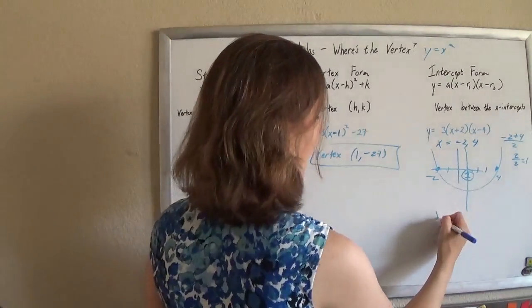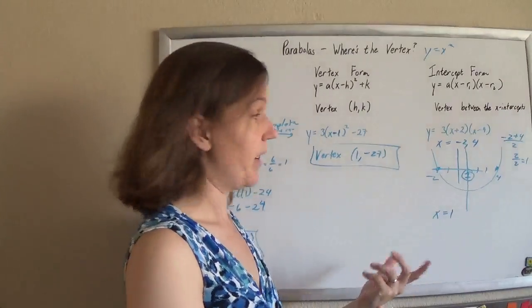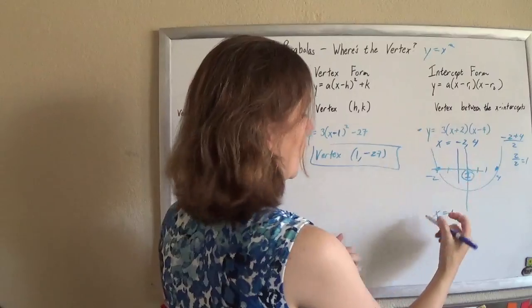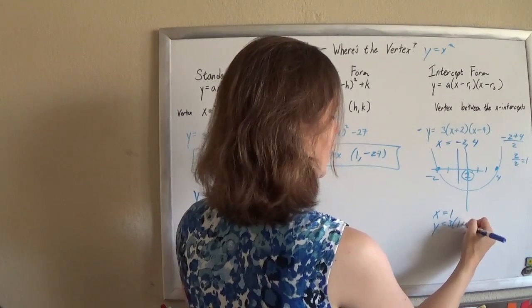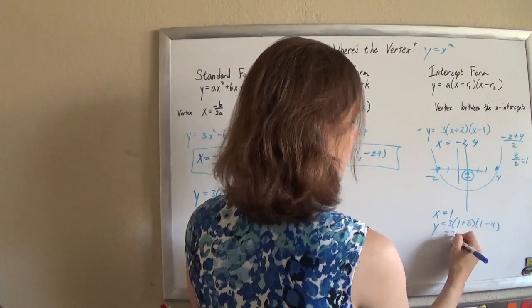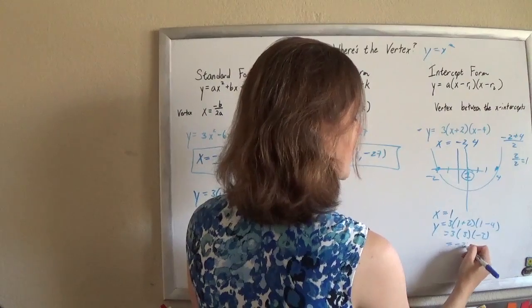Once you have the x-coordinate at the middle, how are you going to find the y? Well, your equation tells you what y equals. So y will equal 3 times 1 plus 2 times 1 minus 4. When the x is 1, the y is 3 times 3 times negative 3, which is negative 27.